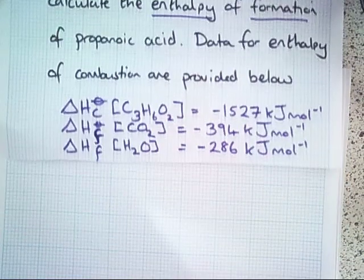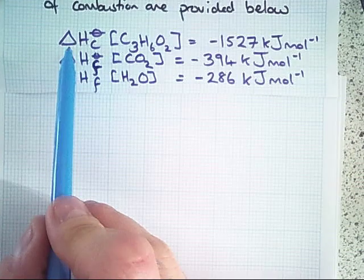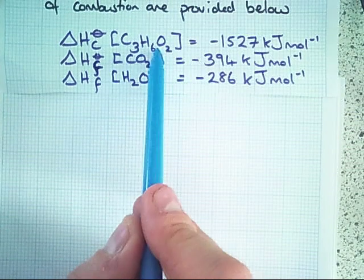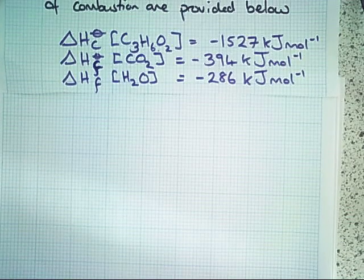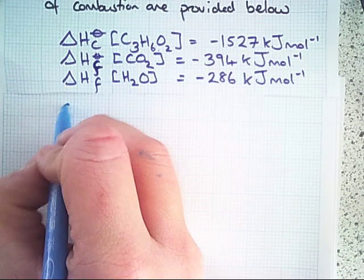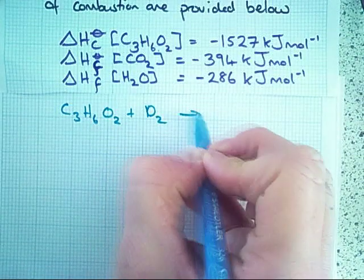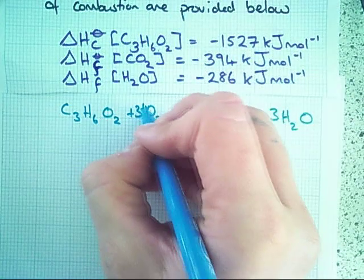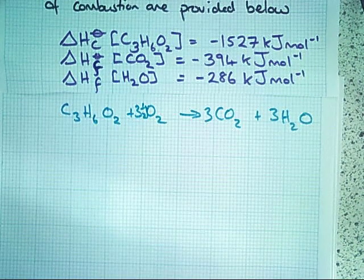Before we start any Hess cycle calculation, we first need to go straight to the data we're given and write some equations for these data. The first value we're given is the enthalpy of combustion of propanoic acid (C3H6O2). The definition of enthalpy of combustion is the enthalpy change when one mole of a compound is combusted in oxygen, producing carbon dioxide and water vapor. To balance this equation, we'll need three and a half O2 molecules.